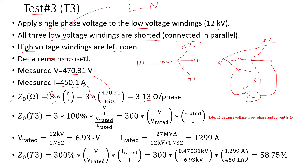This result is 3.13 ohms per phase. The current that flows in the windings is three times the per-phase winding current. So the total measured current is three times the per-winding current. Those threes cancel, leaving per-phase voltage and per-phase current, giving the zero sequence impedance per phase.